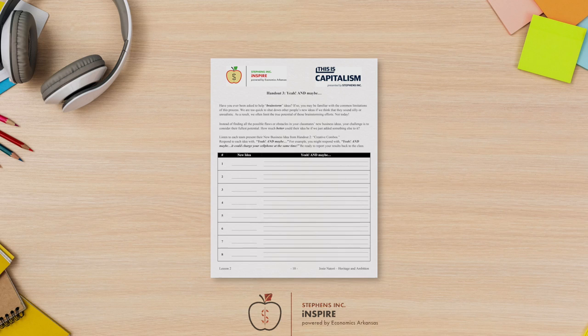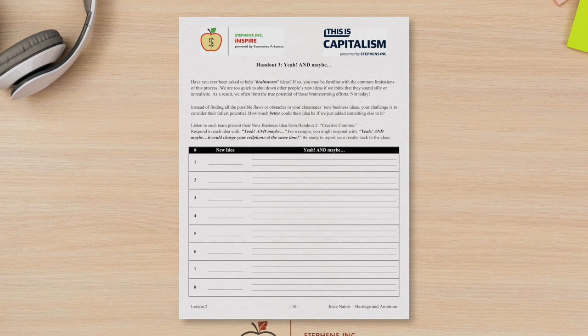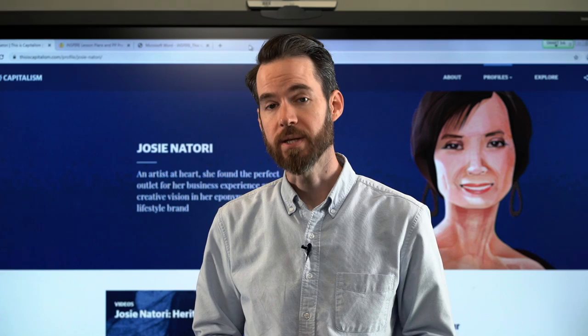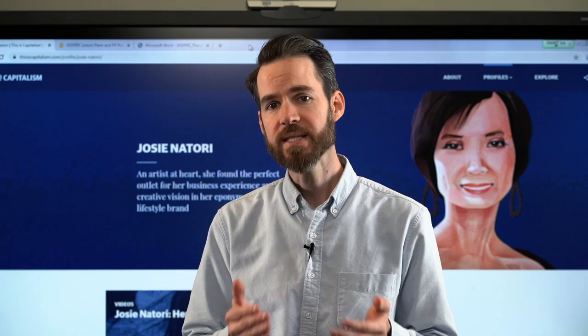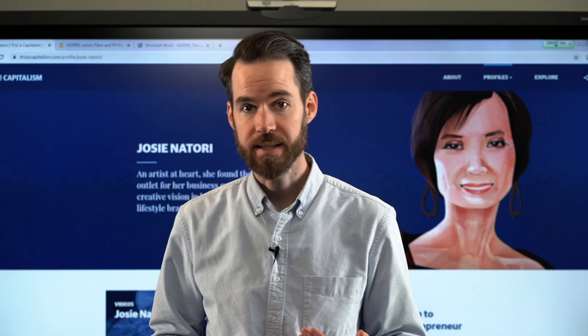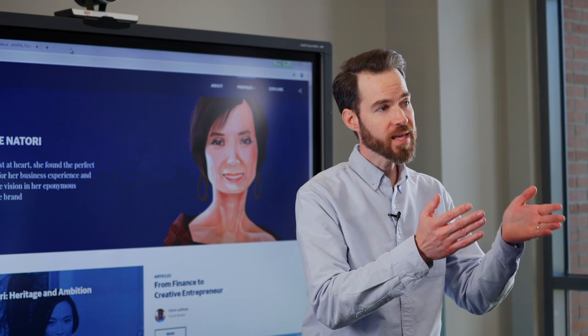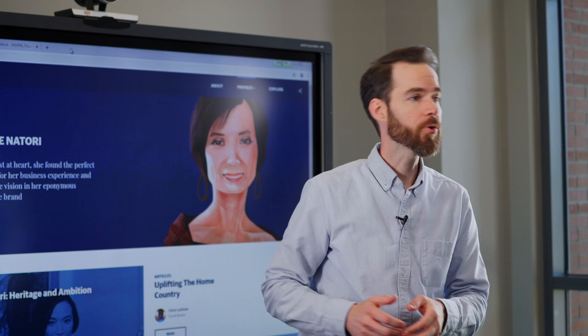Next, distribute a copy of Handout 3 to each team. Allow a few teams to present their new business ideas to the class. During the presentations, have other teams complete Handout 3 together. Allow one minute between presentations for teams to discuss and collect their thoughts. Allow a few teams to share the results that they had from Handout 3, Yeah and Maybe. Emphasize that the goal of this activity was to mix a variety of ideas that might not naturally mix and to ultimately stretch their creativity. This is meant to get students thinking outside of the box, focusing more on abstract possibilities than concrete recommendations.